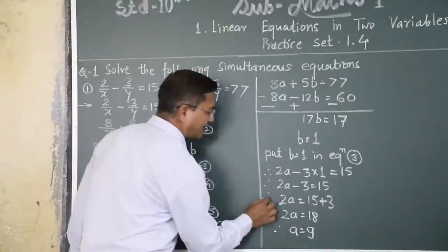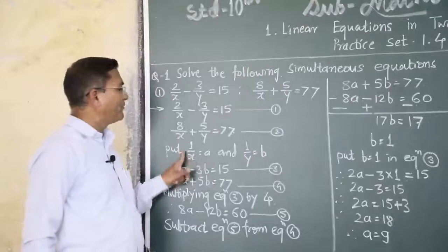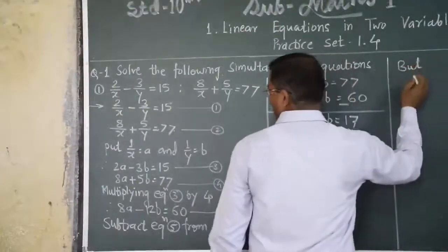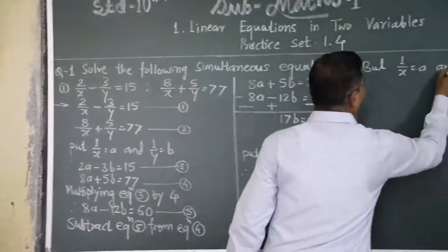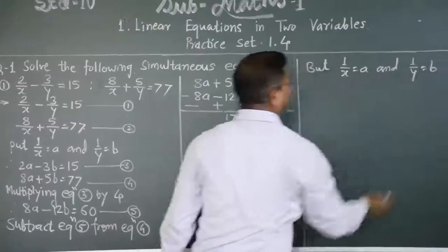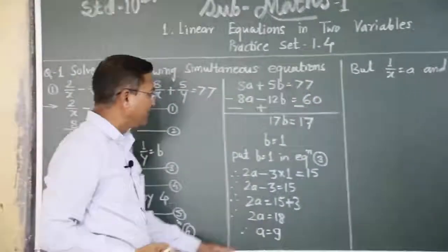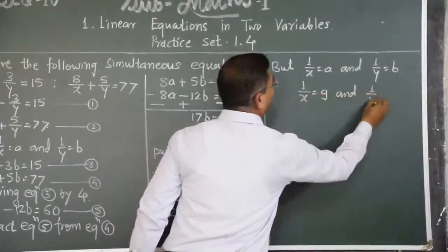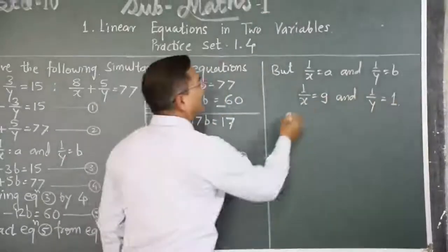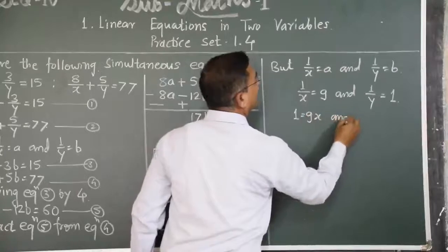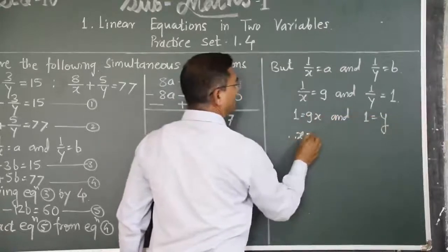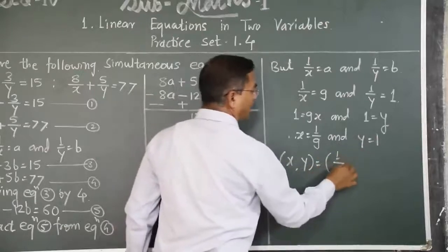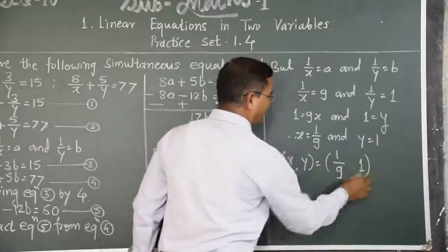The value of a is 9. But we know that a equals 1 upon x and b equals 1 upon y. So 1 upon x equals 9 and 1 upon y equals 1. Therefore x equals 1 upon 9 and y equals 1. The solution is x comma y equals 1 upon 9 comma 1.